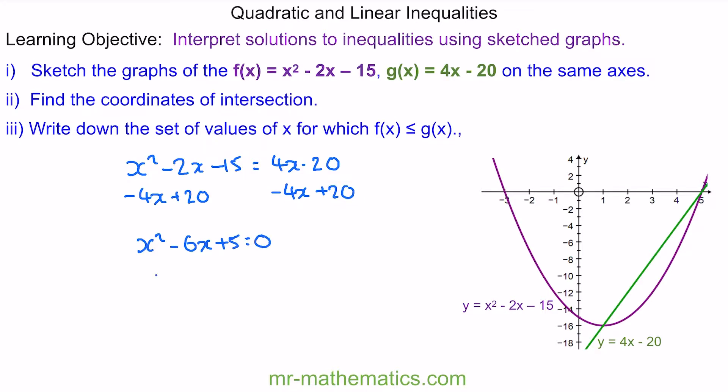We can factorize this. We have x minus 5 and x minus 1. So our solutions are x equals 5 and positive 1. These are where the two lines intersect.